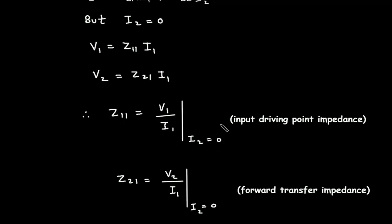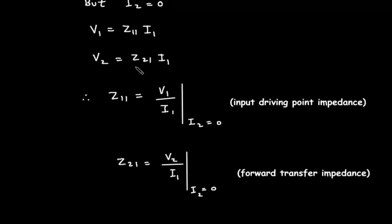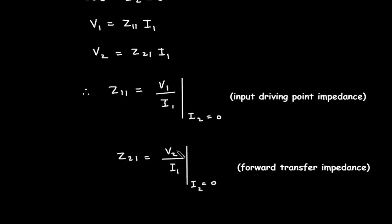Z11 is called the input driving point impedance because it is the ratio of V1 and I1. V1 is the input voltage and I1 is the input current, that's why it is called input driving point impedance. Z21 is equal to V2 by I1 when I2 is equal to 0. Since Z21 is the ratio of output voltage V2 by input current I1, it is called forward transfer impedance.